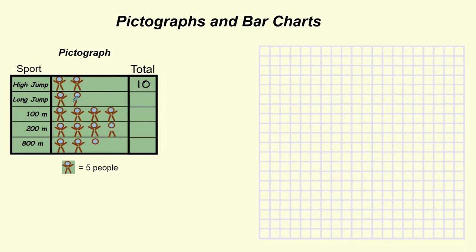Now if we look at the second one, the long jump, you can see we've got one full stick person, but in the second one there's some parts missing. The stick person has five individual parts, so each part represents one person's choice. This is five and then there's two parts here. So five, six, seven. So that's seven people picked long jump.